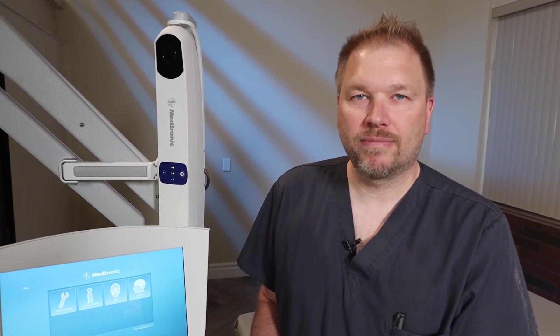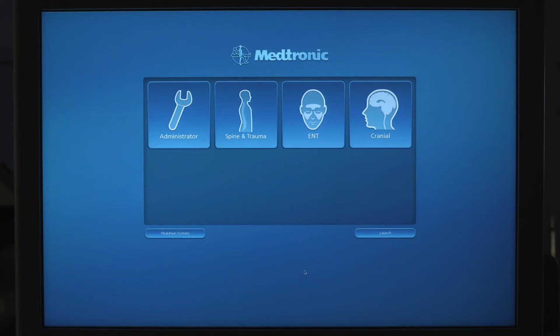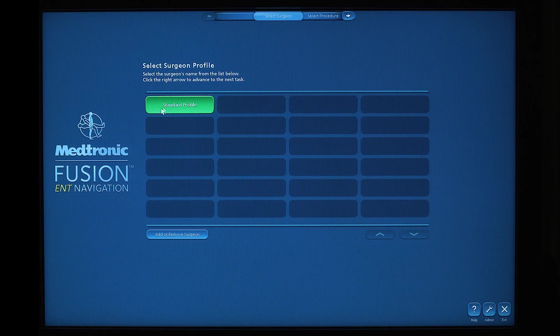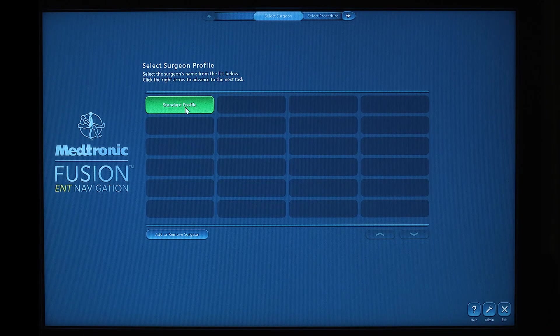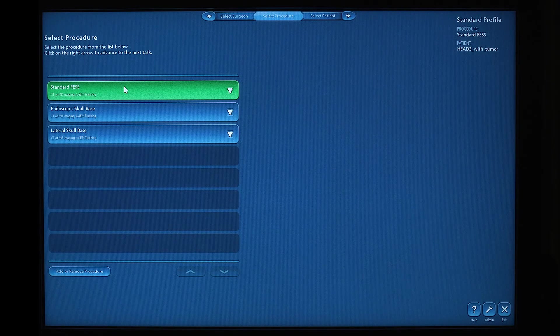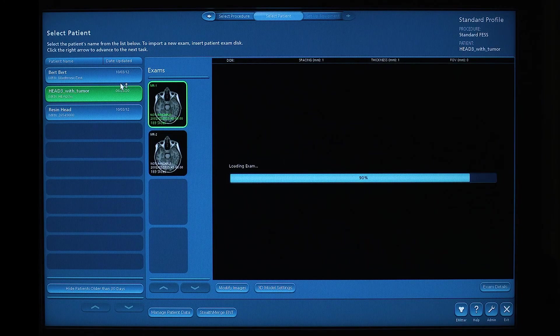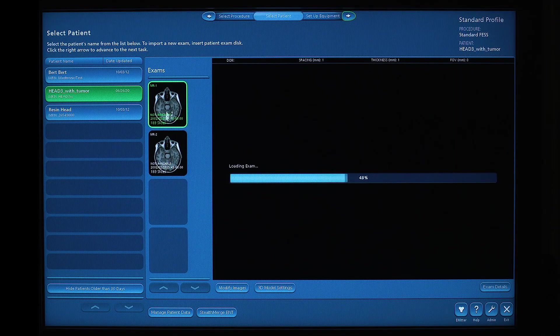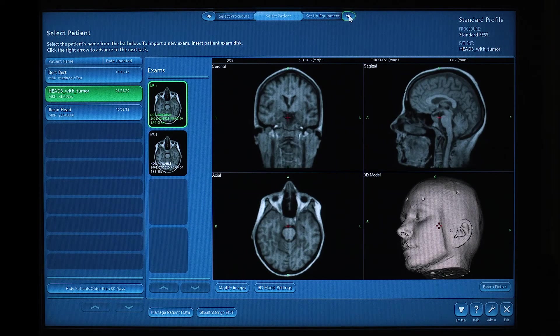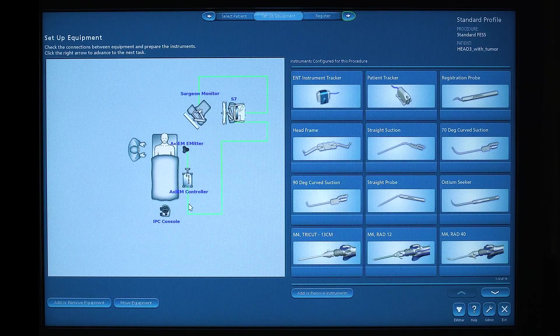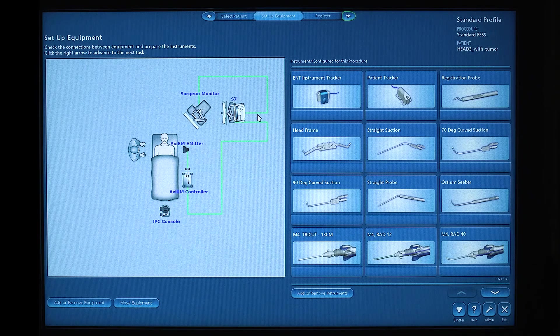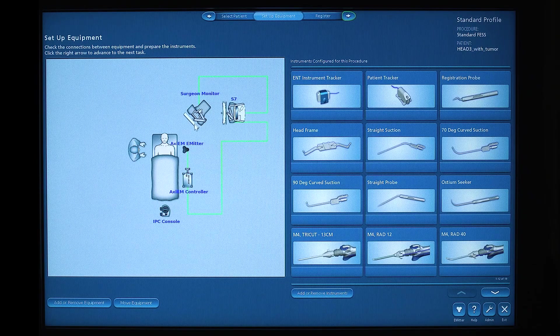I'll now demonstrate the ENT application. To launch the ENT application, hover over the card. You can either single click or double click to launch the application. Once you launch the application, we're going to select a standard profile. You can double click the standard profile or any other surgeon profile that you choose to add. For this instance, we're going to select standard FES. And we're going to use a preloaded exam. We can click next. Verify that your surgeon monitor, axiom emitter, and controller are all showing green status. If there are red indicators on any of those components, double check the connection.